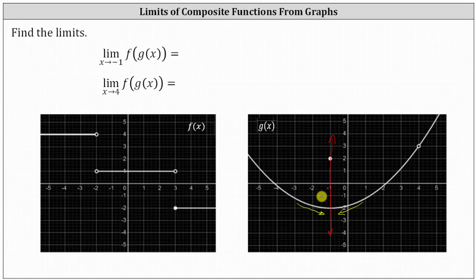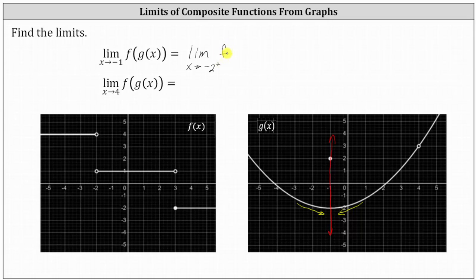Since the outputs of g of x become the inputs of f of x, the outer function, and f of x is discontinuous at x equals negative two, it's important to recognize that we're approaching from above — that is, y values greater than negative two. This indicates the limit as x approaches negative one of f of g of x equals the limit as x approaches negative two from the positive side, or right side, of f of x.